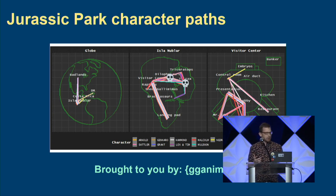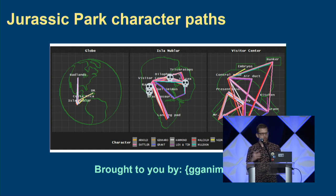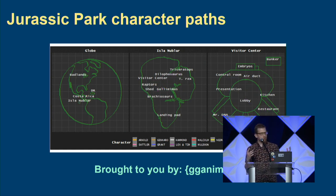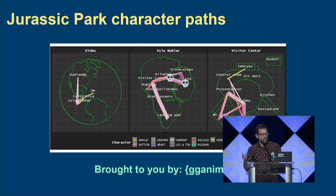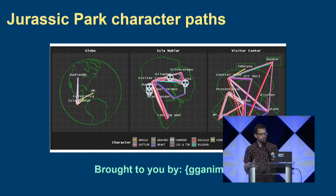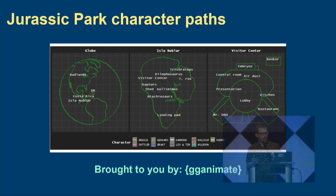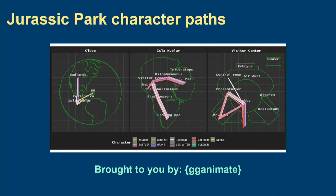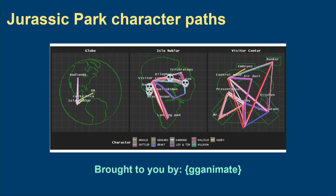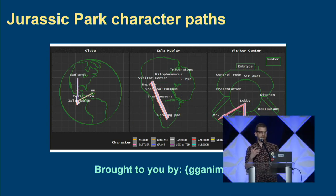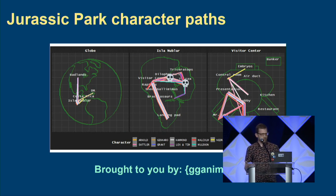Here we have animated character paths of the main characters in Jurassic Park and where they move throughout the movie. We have three maps: the globe, if they moved from the badlands where they were digging up bones to the island itself; a map of the island where they moved between the different dinosaur exhibits; and a map of the visitor center with the interior scenes. Every time a dinosaur eats one of the characters, a little skull emoji pops up. This is a small, silly project, but I learned gganimate this way — all the features, transition elements, and how and when to use them — and that set me up to use it in some of my more serious work.